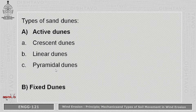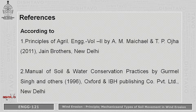Sand dunes are classified into two types: active dunes and fixed dunes. Active dunes are further classified into three types: crescent dunes, linear dunes and pyramidal dunes. These are the references. Thank you.